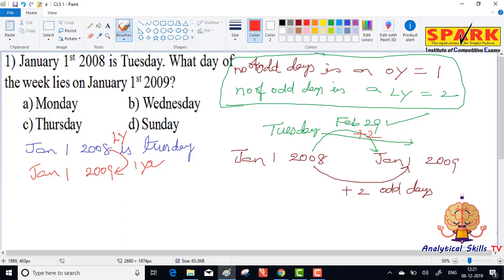It is Tuesday, Wednesday, Thursday. So January 1st 2009 is Thursday.